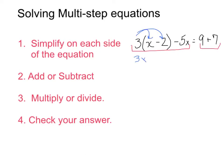So I'm left with 3x minus 6 minus 5x, if I just carry that down, is going to equal 9 plus 7, which is 16.